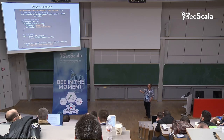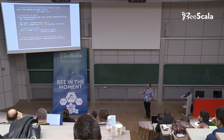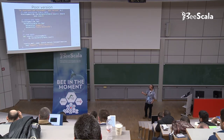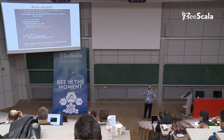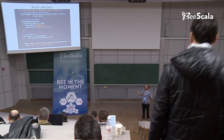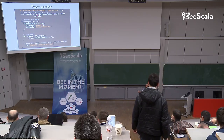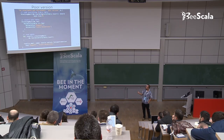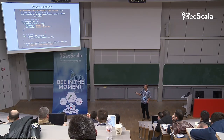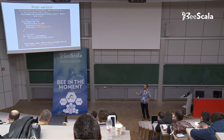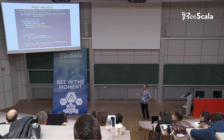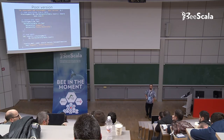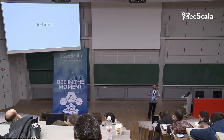Let's see a basic example. We have the university table, which is our TableQuery object. Using .result on a TableQuery object generates a SELECT * FROM the table and converts the Query into a DBIOAction. We run it, have nothing in the database, then do another operation to add two elements to the database, then do the query again and should have those two elements in the results. Easy.